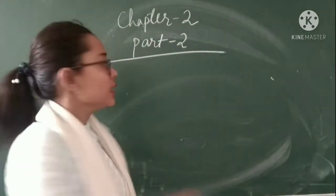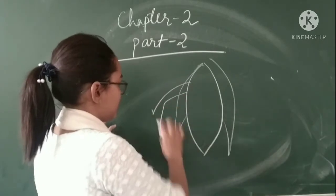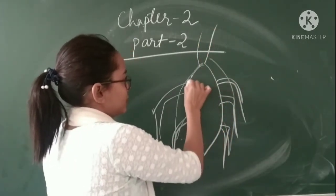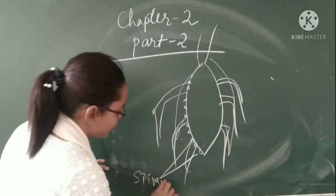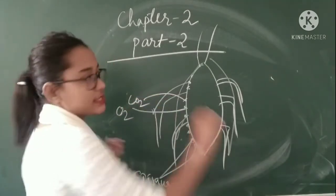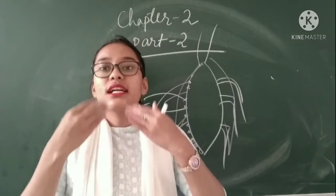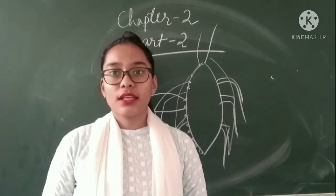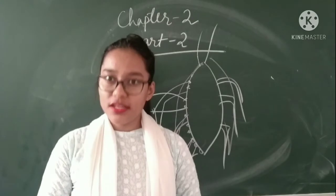Insects like cockroach and grasshopper - over their body, on the sides of their body, there are several pores present called spiracles. Through these spiracles, they take in oxygen and release carbon dioxide. Similarly, the carbon dioxide which is produced inside our body through lungs comes outside via the nose. Carbon dioxide which is produced inside our body is exhaled outside from the same nostrils.